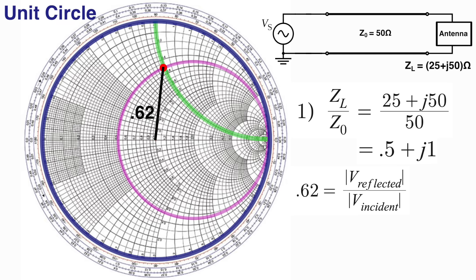So the smaller that ratio is, or the closer this intersection is to the center, the better. That means less of the wave will get reflected and more will go to the antenna.